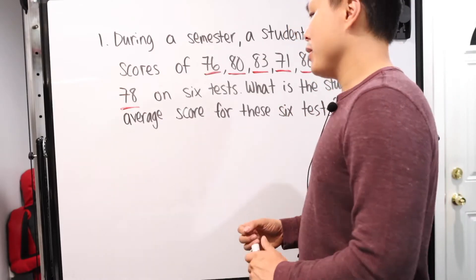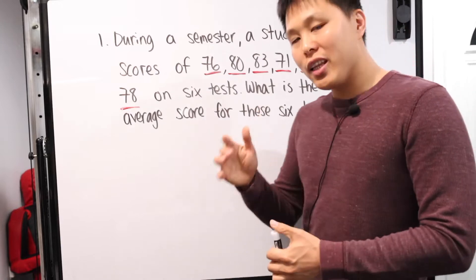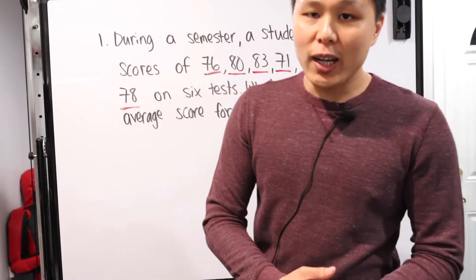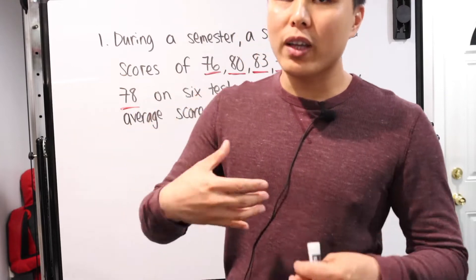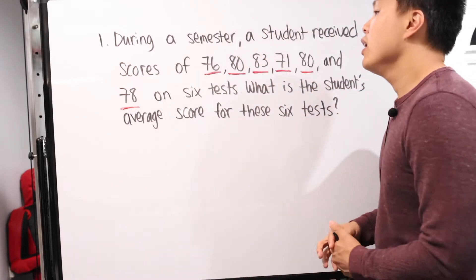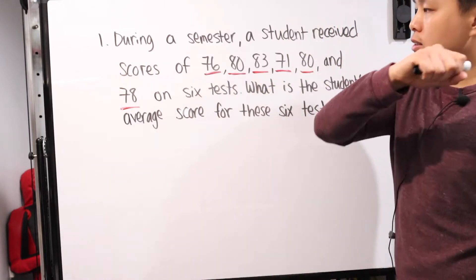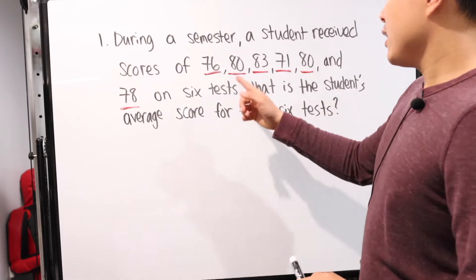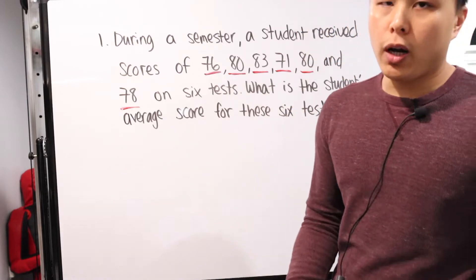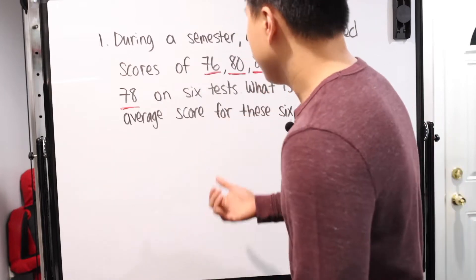All right, so let's go over the first problem. The majority of the problems are gonna be word problems — our favorite, right? I'm gonna put a link to the actual practice exam so you guys can go over and try to solve it yourself. If you got the answer and understand what's going on, great. If not, hopefully this video or a future video in this series will answer that specific question. So the first problem: during a semester, a student received scores of 76, 80, 83, 71, 80, and 78 on six tests. What is the student's average for these six tests?